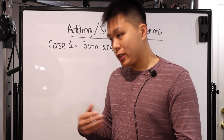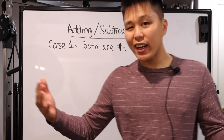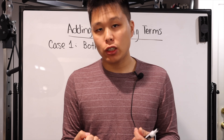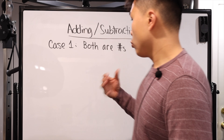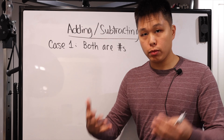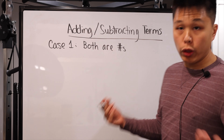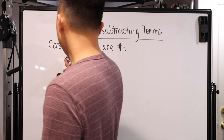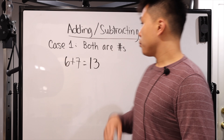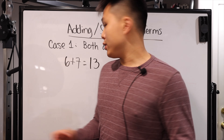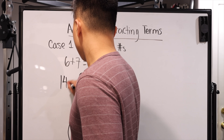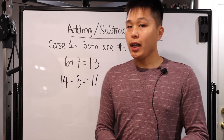Now that we have the warning out of the way — all the cases where you really can't add or subtract terms — let's focus on when you actually can combine them. The first case is when they're both numbers. That's just simple arithmetic. If they're both numbers, 6 plus 7 equals 13. For subtraction, same thing — 14 minus 3, you just carry it out as normal. That's case one.